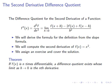Today on Math with Rob, we're going to be talking about the second derivative difference quotient. The difference quotient for the second derivative of a function is given by f'' of x equals d squared f / dx squared, and that equals the limit as h approaches 0 of f(x+h) minus 2f(x) plus f(x-h), all over h squared.